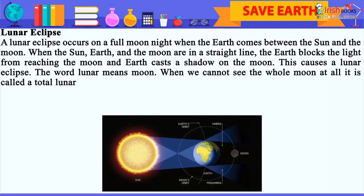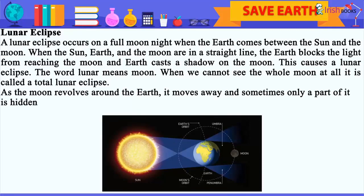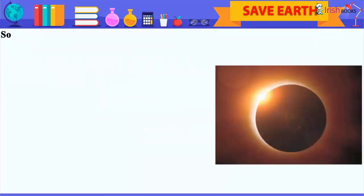The word lunar means moon. When we cannot see the whole moon at all, it is called a total lunar eclipse. As the moon revolves around the earth, it moves away and sometimes only a part of it is hidden by the shadow of the earth — this is called a partial lunar eclipse.